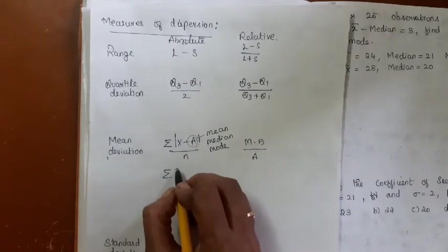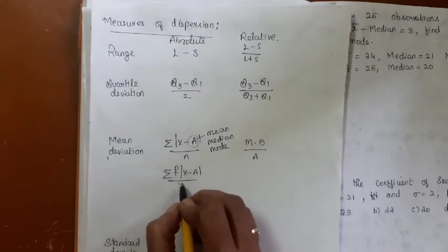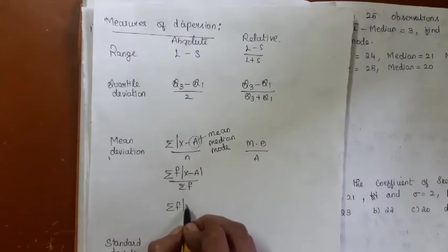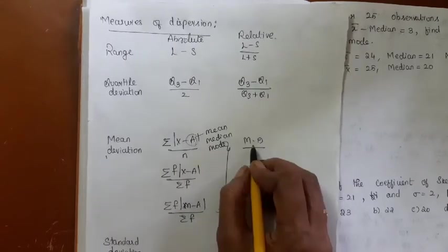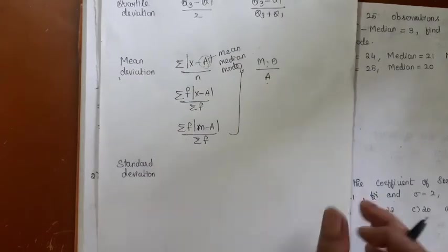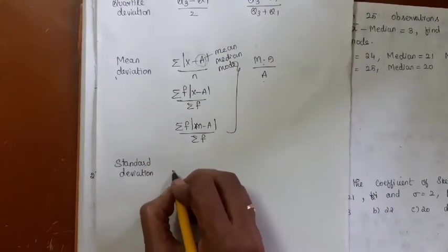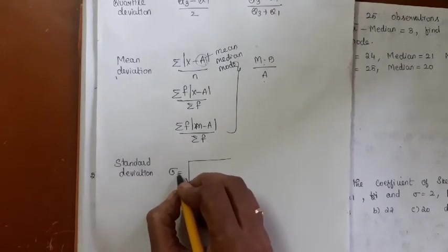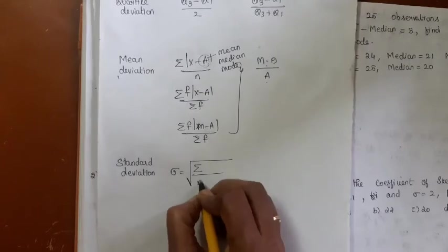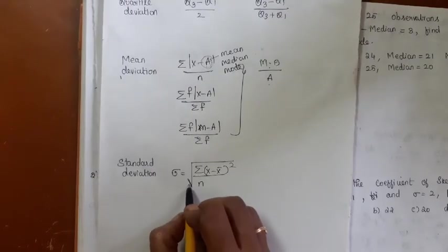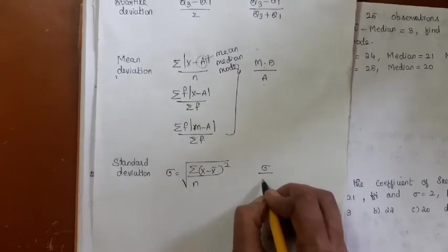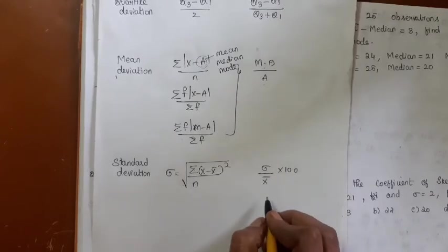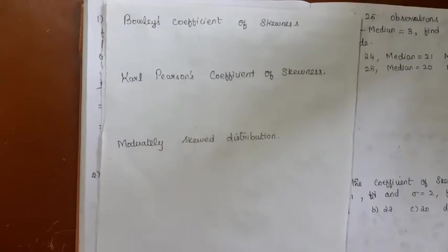There is a formula for individual series, discrete series, and continuous series. Mean deviation divided by 'a' is the relative measure of mean deviation, also called the coefficient of mean deviation. Standard deviation, denoted as sigma, is called the root mean square deviation — it is the square root of the arithmetic mean of squares of deviations of observations from the arithmetic mean. Its relative measure is called the coefficient of variation.